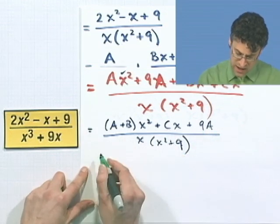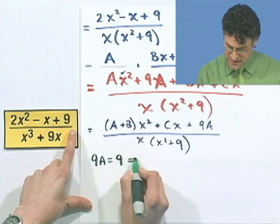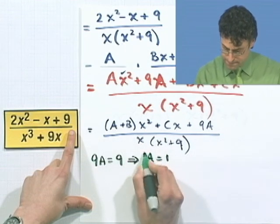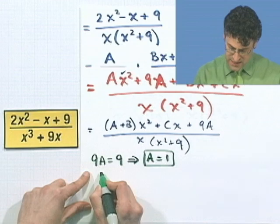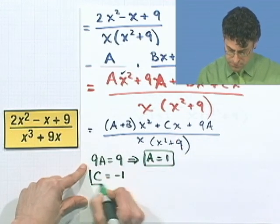In fact, I see that 9a constant has to equal the constant. And that immediately tells me that a equals 1. Boom. And then what do I know? I know that c, this coefficient has to equal that. So c equals negative 1. Boom.